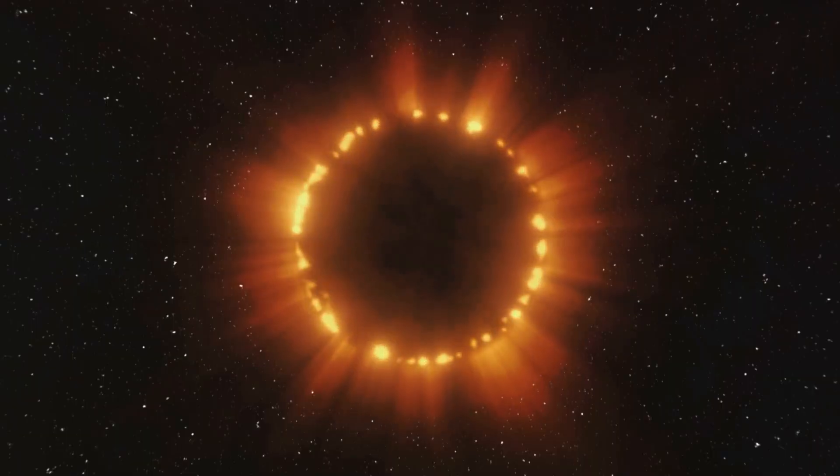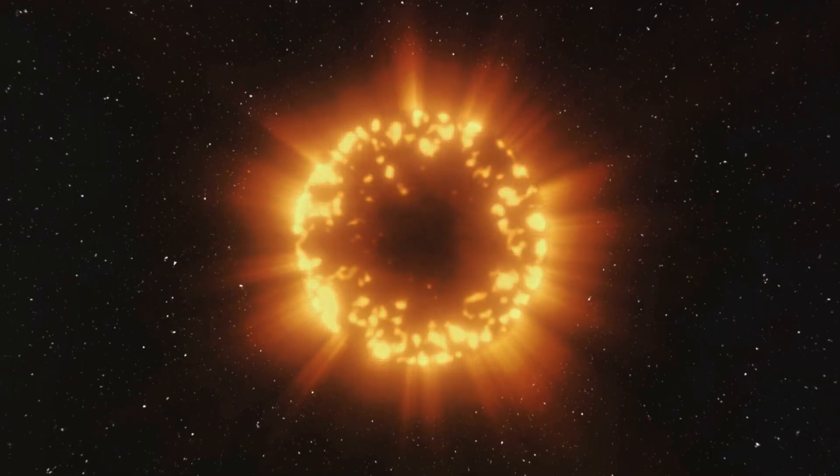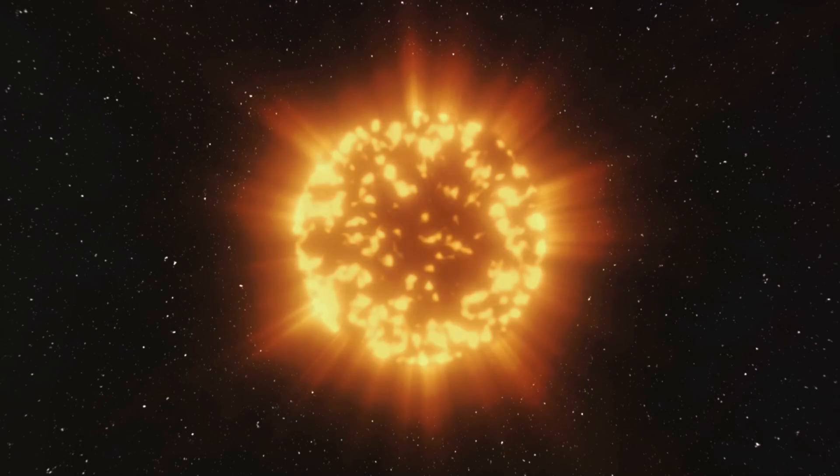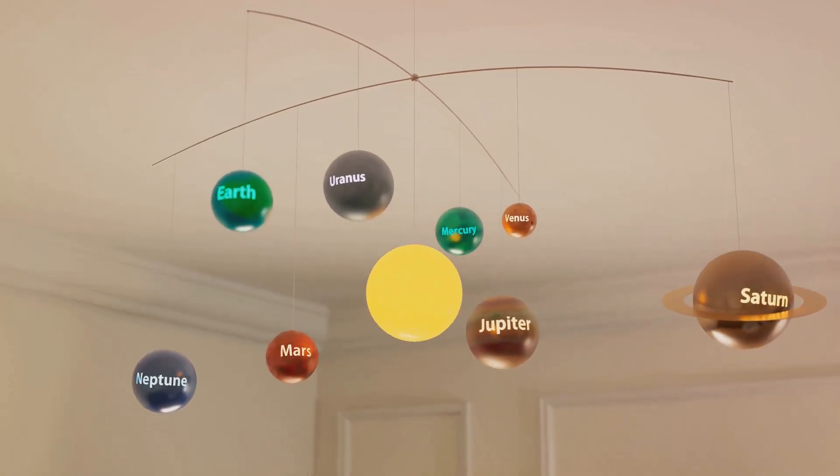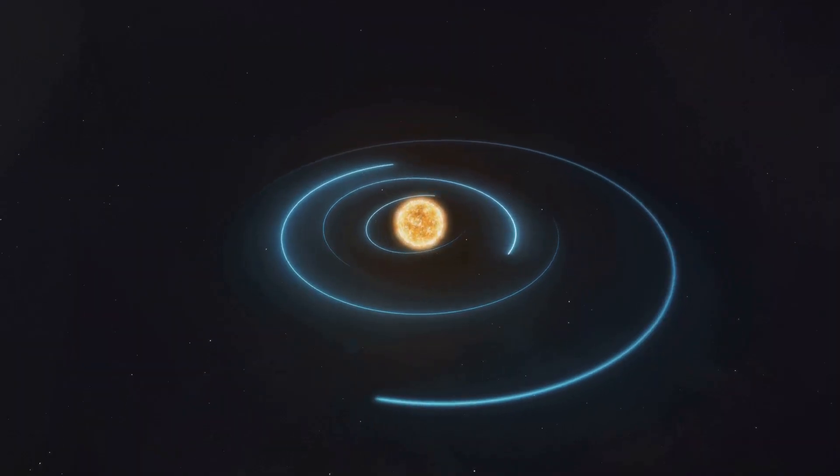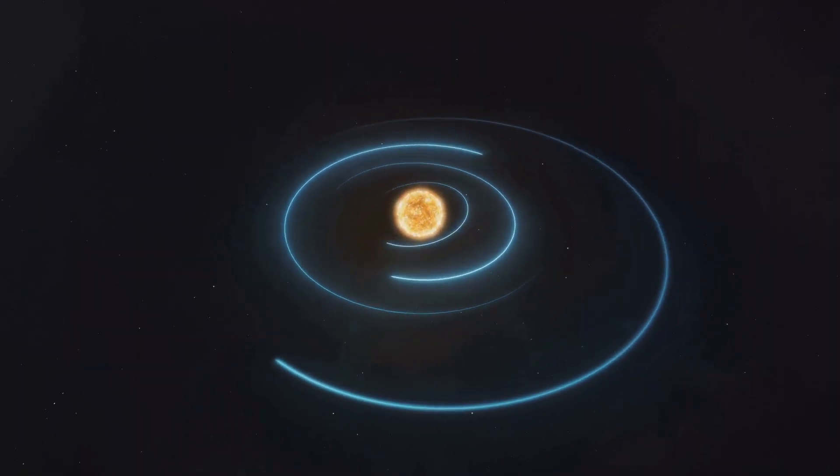Our current understanding of the formation and evolution of the solar system points to a single star system. The intricate dance of the planets and their orbits around our sun is finely tuned, and introducing a second sun into this mix would likely cause chaos.